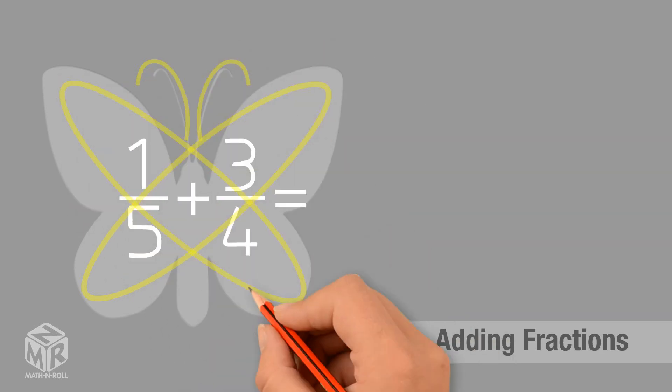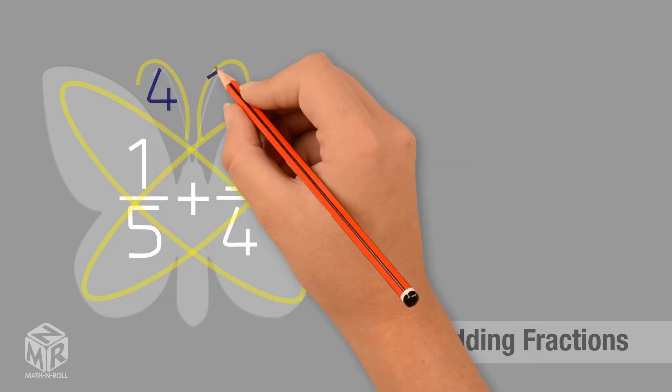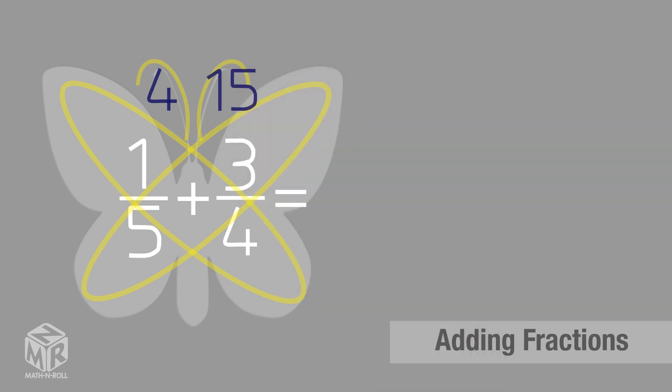Next, we multiply the numbers in each wing. 1 times 4 equals 4, and 3 times 5 equals 15. We put the product of each wing in the antennas.